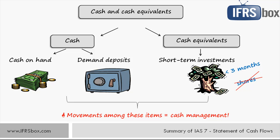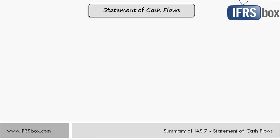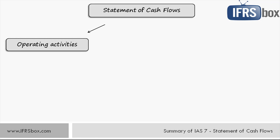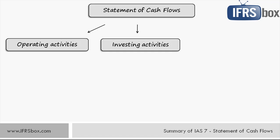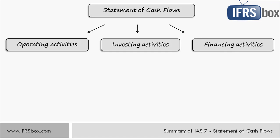IAS 7 prescribes that we should report cash flows in three main parts: cash flows from operating activities, cash flows from investing activities, and cash flows from financing activities. Operating activities are the principal revenue-producing activities and also activities other than financing and investing. This part is the key indicator showing whether operations generate enough cash to repay loans, pay dividends, and make new investments without external money.